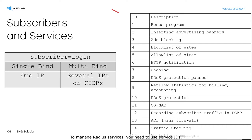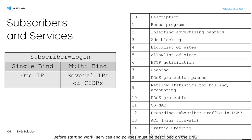To manage RADIUS services, you need to use service IDs. The required service identifier and profile name should be transmitted. Before starting work, services and policies must be described on the BNG.